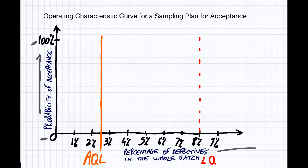And then on this axis here we have the percentage of defectives in the whole batch. This we usually don't know about except if we do an inspection on the whole batch. Of course this is only an interesting analysis when we do a random inspection, but it's something we need to keep in mind.